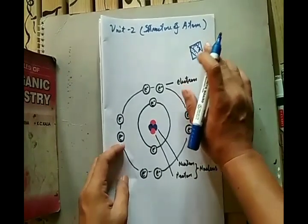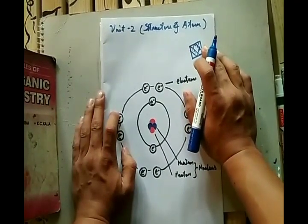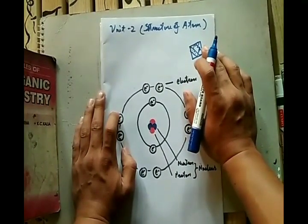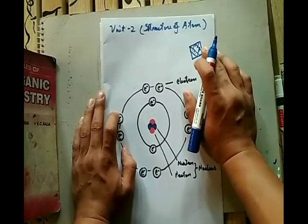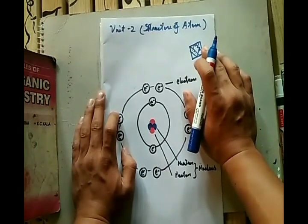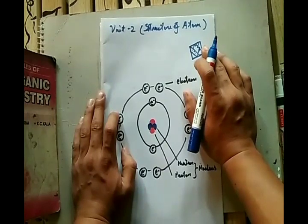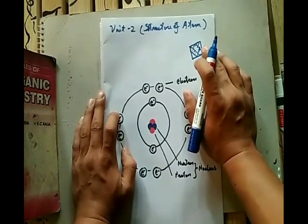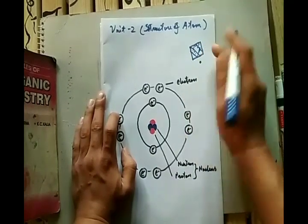Ancient Indian and Greek philosophers believed that the atom is the smallest building block of matter. According to them, continued division of matter will ultimately yield atoms which could not be further divided.